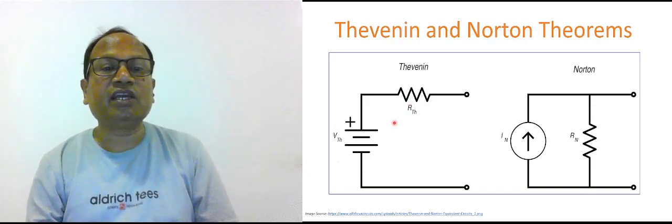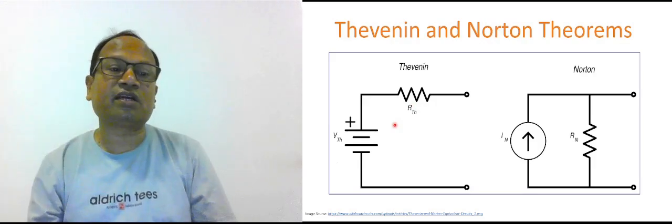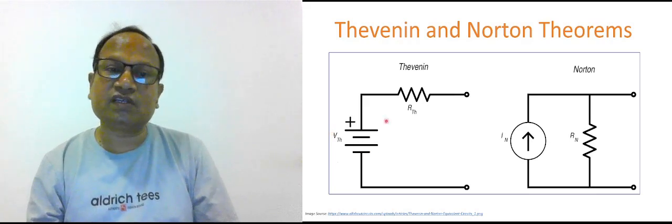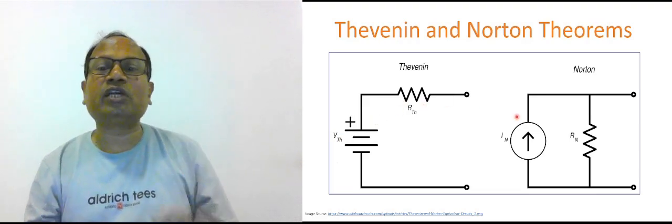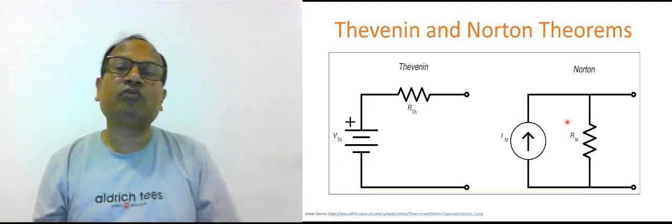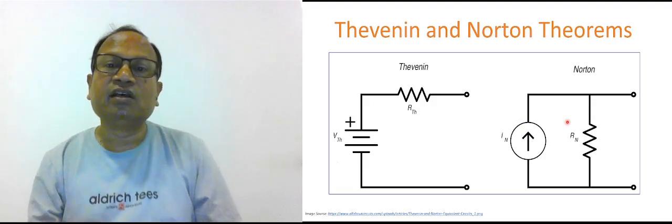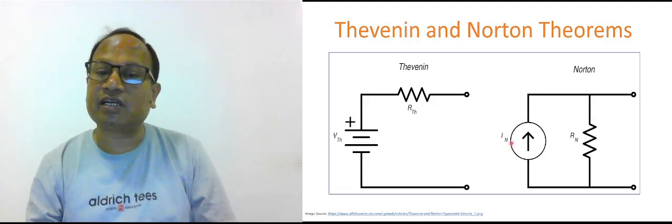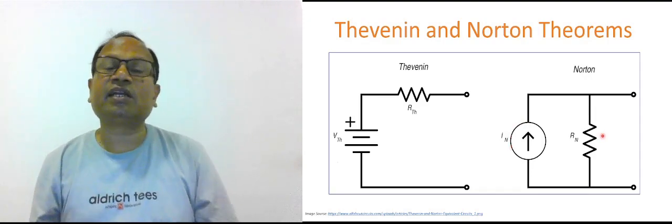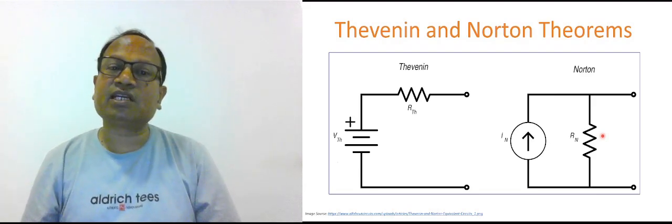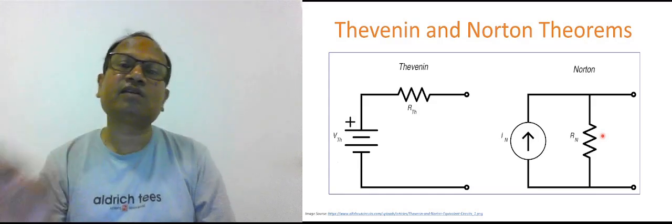As you can see, the Thevenin equivalent circuit simply converts the entire circuit or a given circuit into a simple equivalent circuit consisting of a single voltage source in series with resistance — what we call Thevenin voltage and Thevenin resistance. The duality of Thevenin theorem is the Norton theorem, where we convert the entire network into a single simple circuit consisting of a current source in parallel with a resistance, called Norton current and Norton resistance respectively. Let us understand both theorems with the help of one example each.